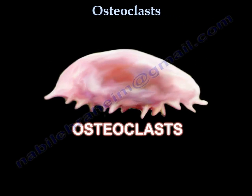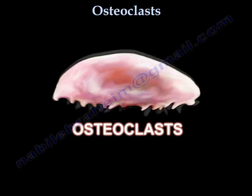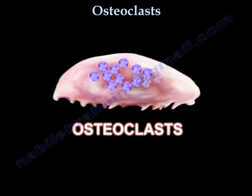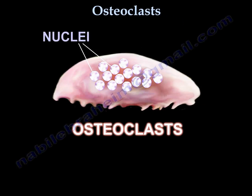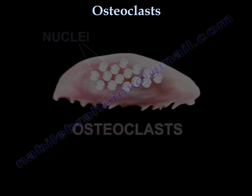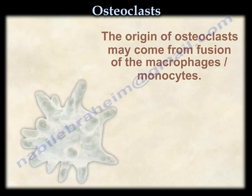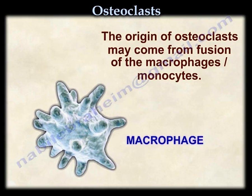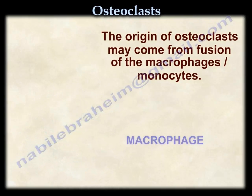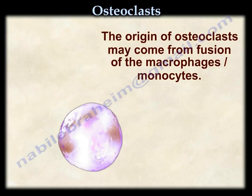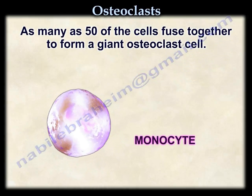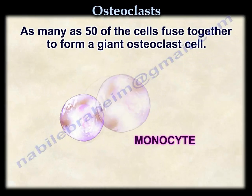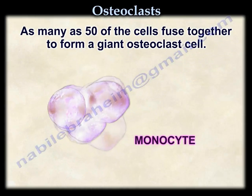The osteoclast is a large multi-nucleated cell with about 15 to 20 nuclei. Its origin may come from fusion of the macrophages/monocytes — as many as 50 of these cells fuse together to make a giant cell.